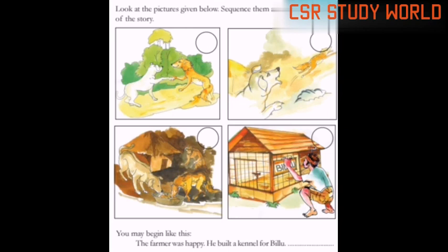You may begin like this — you can start from here. The farmer was happy. He built a kennel for Billu. The farmer was happy; he built a kennel for Billu.